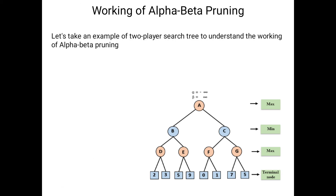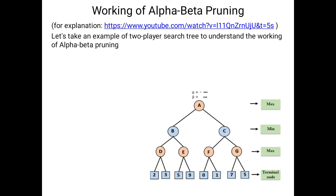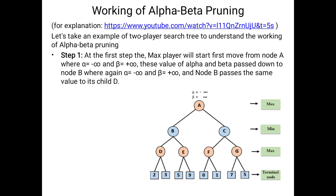Now we will start the example. A link to the detailed explanation is provided. Here we consider a number of nodes and at the bottom we observe the terminal values. Each node is assumed as either maximum or minimum level. The top node is assumed as maximum level, the next level as minimum, then maximum, and so on. Initially, alpha is minus infinity and beta is plus infinity.